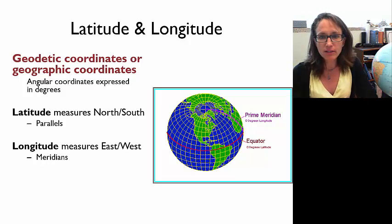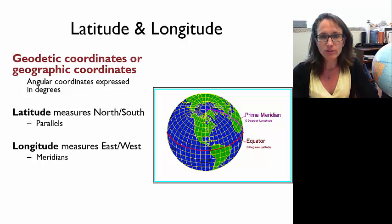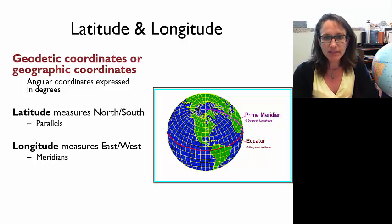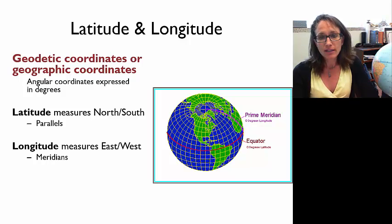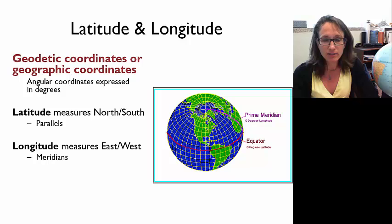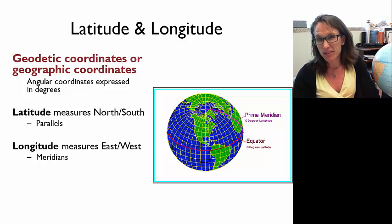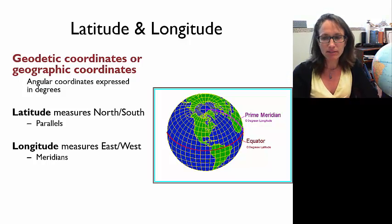Continuing with our review of cartography to get ready for collecting good quality GPS data, we need to review different coordinate systems. The first one we'll talk about are geographic coordinates or geodetic coordinates, which are latitude and longitude. They're angular coordinates expressed in degrees, and that's one of the reasons that actually makes them a little harder to use sometimes.